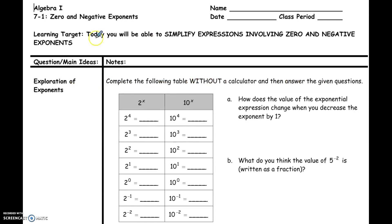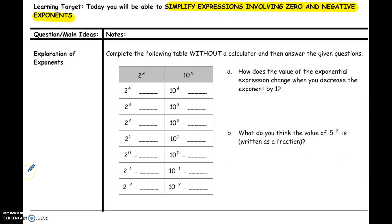Today's learning target is that you will be able to simplify expressions that have zero and negative exponents in them. So by the time we finish today, you should be able to come to class tomorrow ready to solve some zero and negative exponents. If you haven't already taken the time to look at the table on the worksheet, go ahead and do that now. Complete the table without a calculator, then hit the pause button and come back when you're ready.